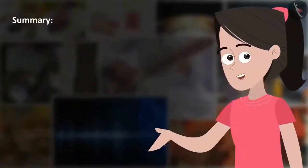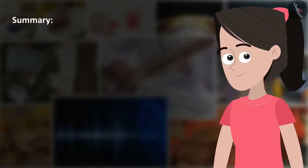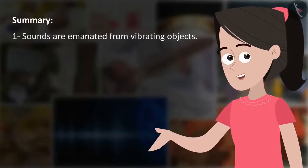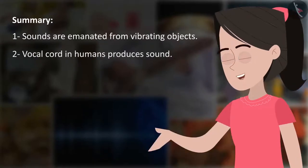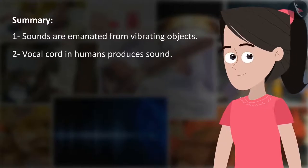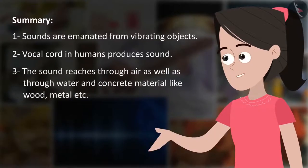Friends, let us review what we have learned so far. Sounds are emanated from vibrating objects. The vocal cord in humans produces sound. Sound reaches us through air as well as through water and solid materials like wood, metal, etc.